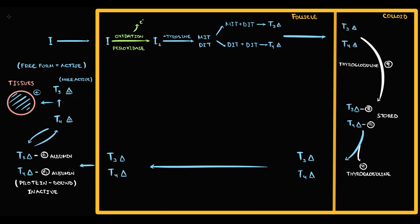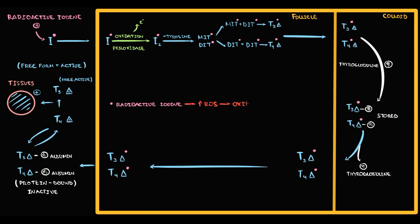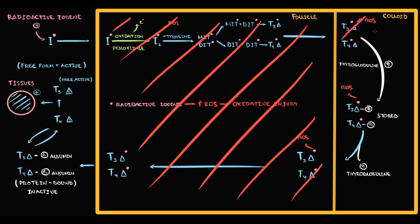If thionamides do not help, the next option is radioactive iodine. It is essentially inorganic iodine with a radioactive isotope, so the pathway into the thyroid gland remains the same. The difference is that once the radioactive iodine reaches the thyroid gland, the radioactive isotopes induce formation of reactive oxygen species — free radicals — which cause severe oxidative stress and death of thyroid cells. Without thyroid cells, thyroid hormone production ceases and levels in the blood decrease.